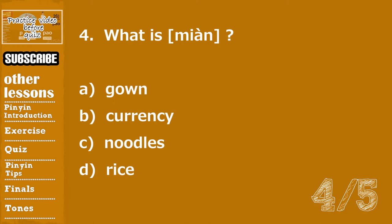Question number four. 第四题. What is 面? A. Gown. B. Currency. C. Noodles. D. Rice.